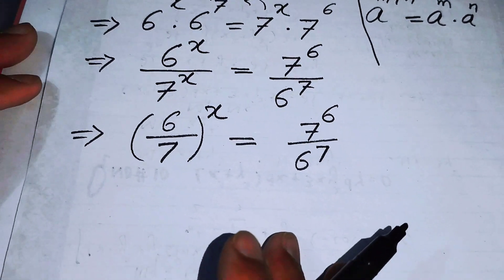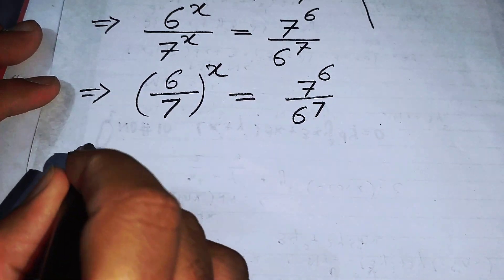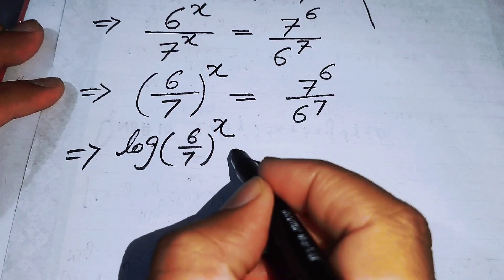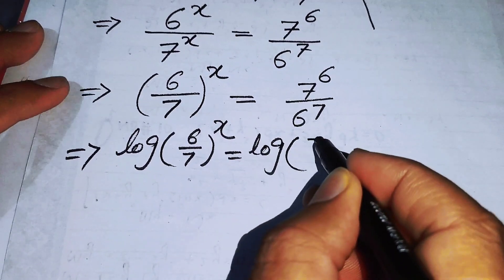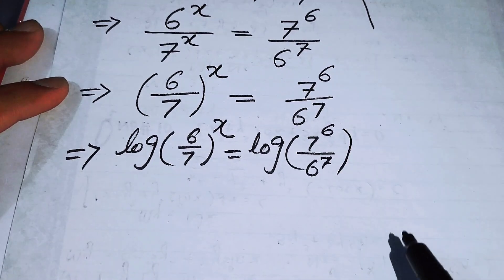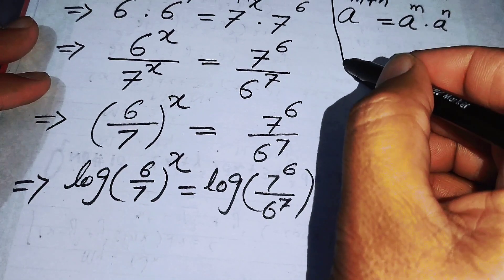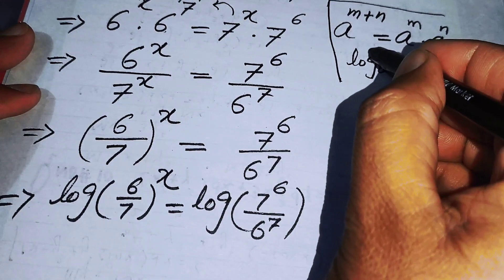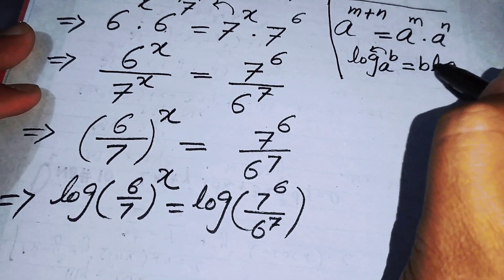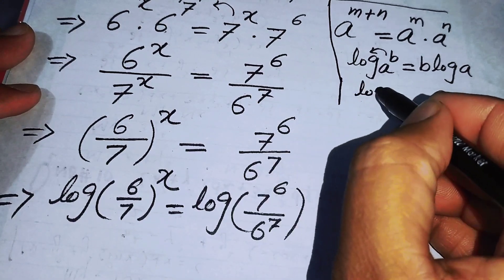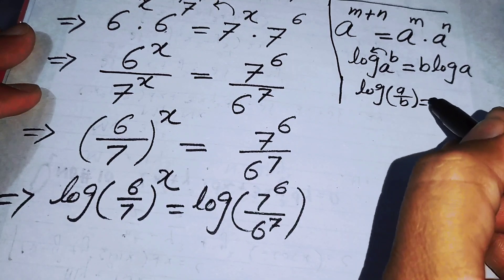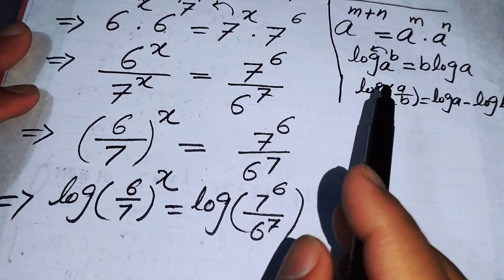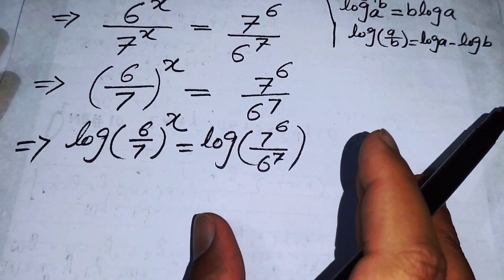Now we take the natural log on both sides. When we take the log, the left side becomes log of 6 over 7 to the power of x, equals log of 7 to the power of 6 over 6 to the power of 7. We will then apply the logarithmic properties: log of a to the power of b equals b times log a, and log of a over b equals log a minus log b.